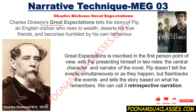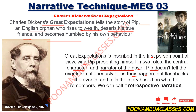Here comes Great Expectations by Charles Dickens — again a very famous novel. It is the story of Pip, an English orphan who rises to wealth, deserts his true friends, and becomes humbled by his own behavior — that is why we call it a Bildungsroman. Great Expectations is narrated in the first-person point of view, with Pip presenting himself in two roles. Pip does not tell events simultaneously as they happen; instead, he tells them as flashbacks based on what he remembers — making it retrospective narration.